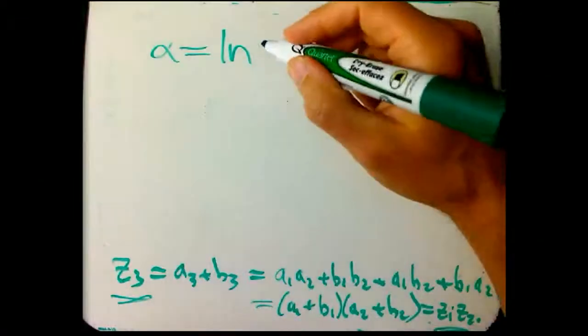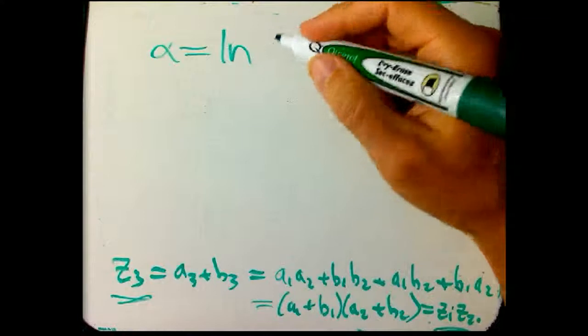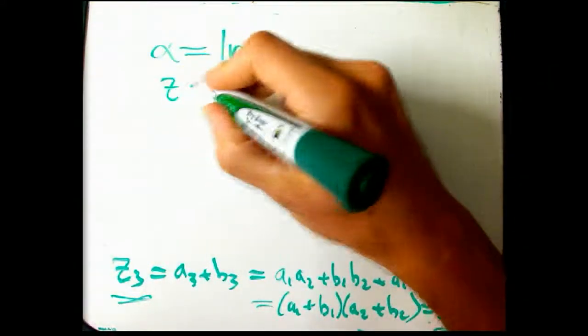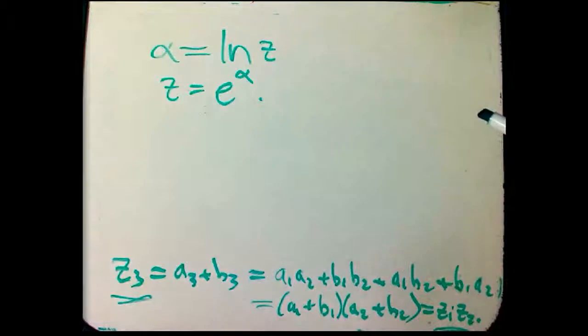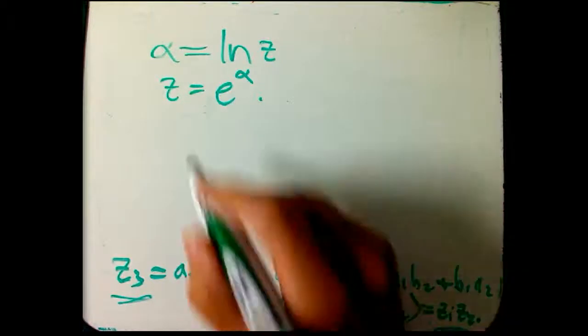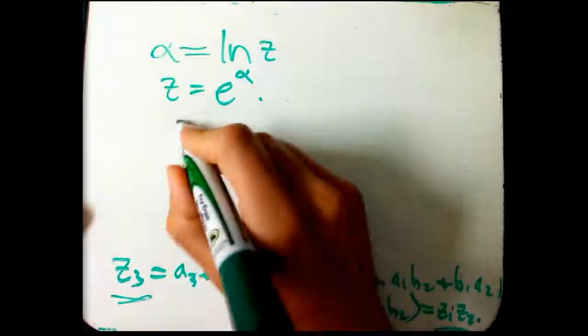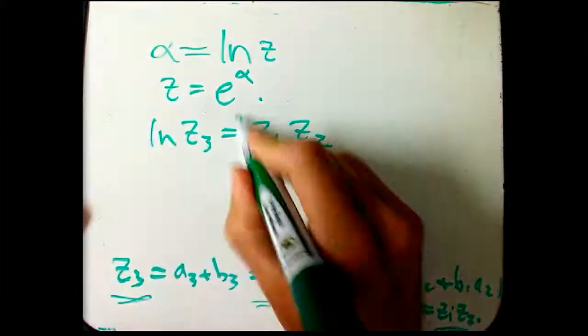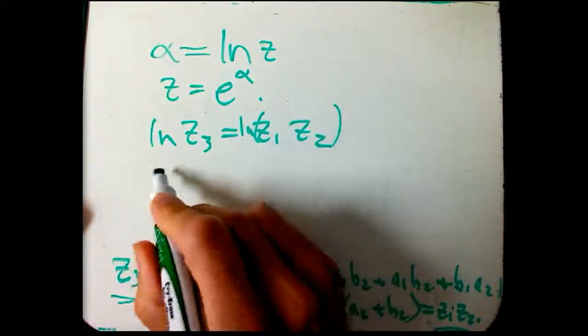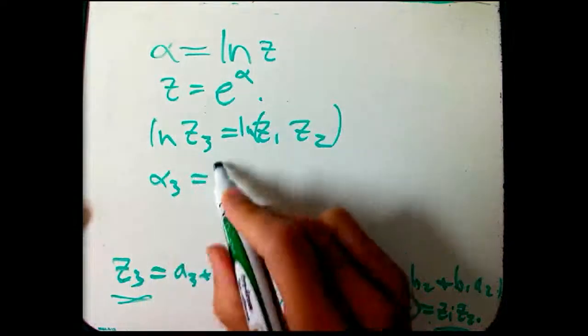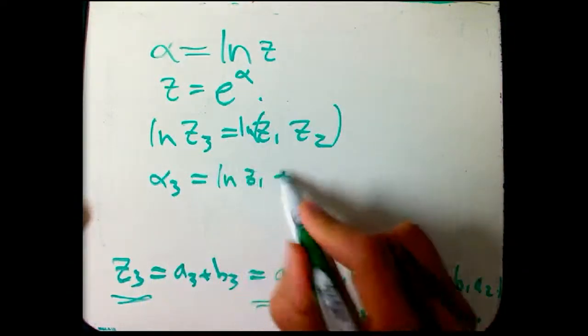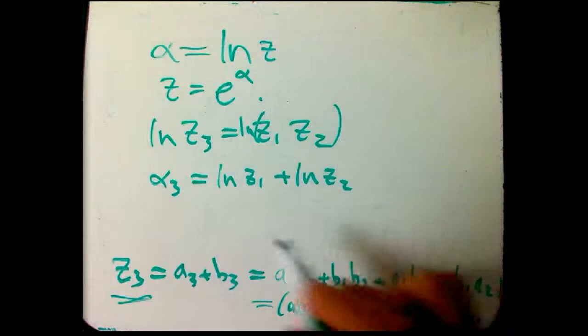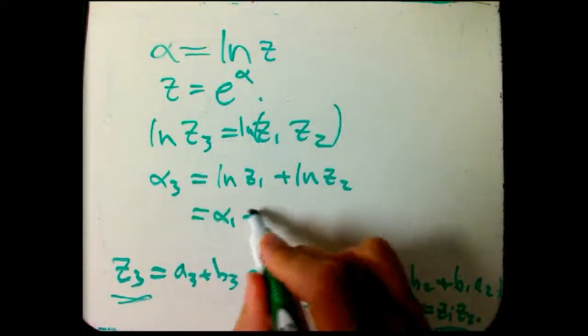So we're going to say alpha is defined to be the ln of z. Or in other words, z is e to the alpha. And so if we take the ln of this multiplicativity equation, ln of that is ln of this, we get alpha 3 is ln z1 plus ln z2 because the logarithm of a product is the sum of the logs. And that's just alpha 1 plus alpha 2.